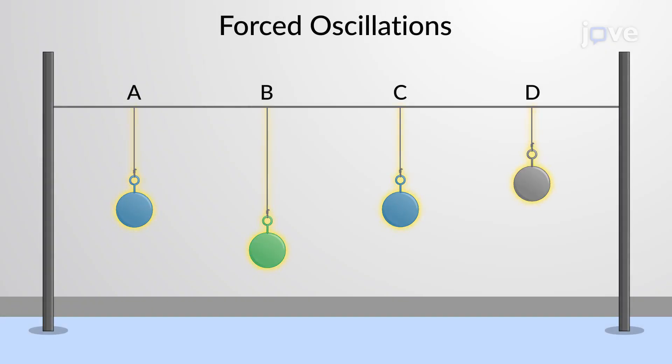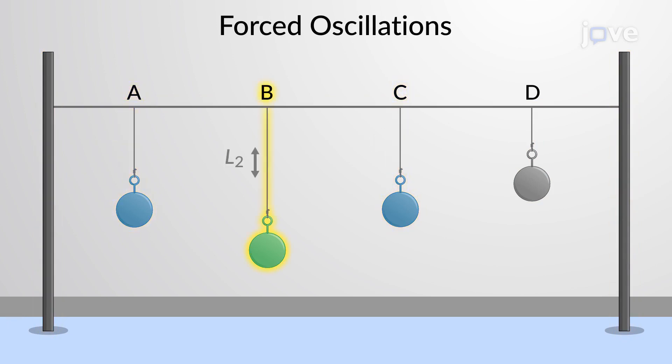Consider four pendulums tied to a string and suspended from a rigid support. Let the lengths of pendulum A and C be identical, while pendulum B and D have different lengths.